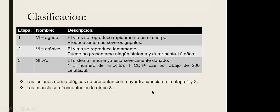Otra clasificación se basa en síntomas y se divide en: asintomática, linfadenopatía crónica —inflamación de ganglios que puede durar incluso años, también llamada síndrome gay— y como tal el SIDA. También existía una clasificación utilizada en zonas cercanas a los trópicos, basada en si presentaba alguna infección endémica o característica del lugar, del estadio 1 al estadio 5.